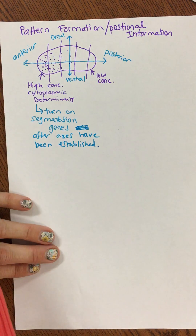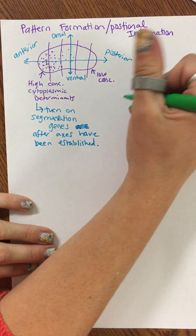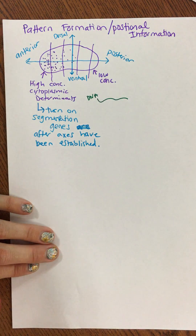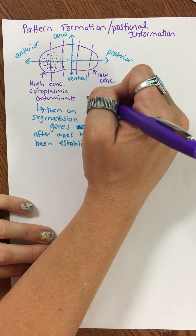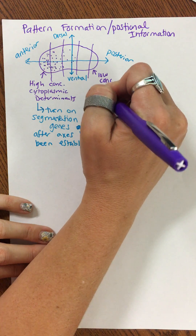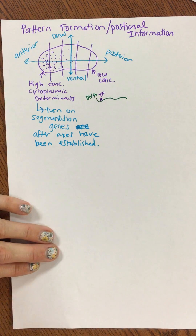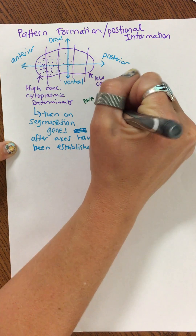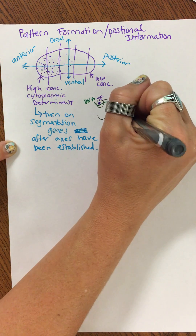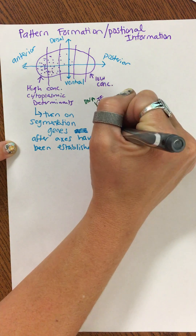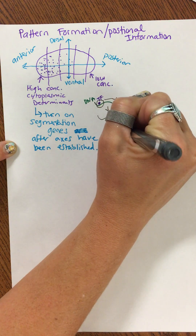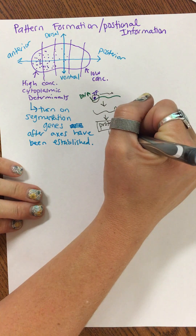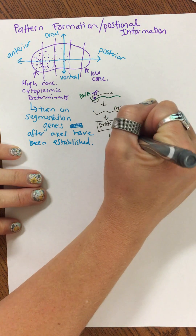Now, if you remember our DNA diagram here — you have some DNA, and if you have your cytoplasmic determinant, these little purple dots act as a transcription factor and turn on a gene. Here's RNA polymerase moving down, producing mRNA, and then that codes for a protein.